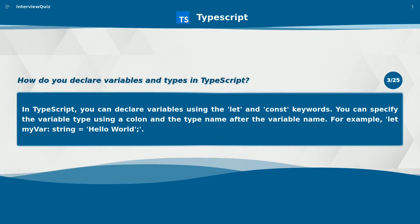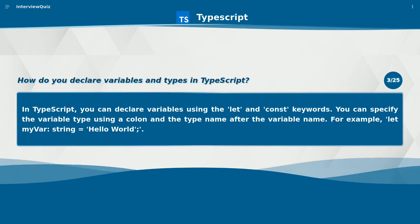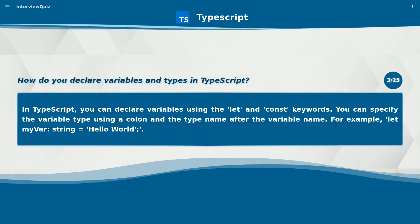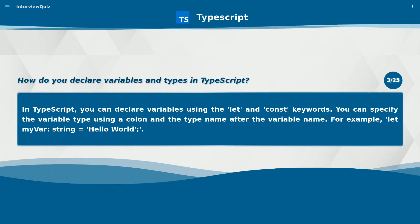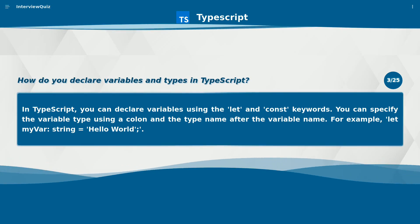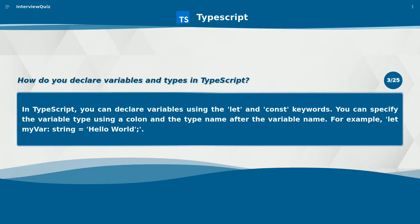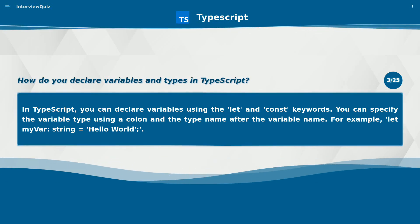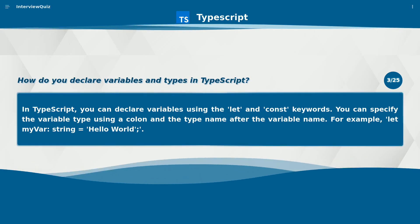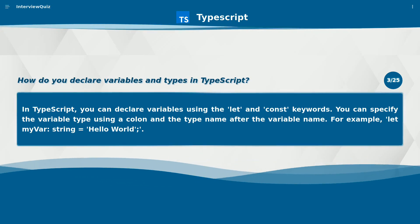How do you declare variables and types in TypeScript? In TypeScript, you can declare variables using the let and const keywords. You can specify the variable type using a colon and the type name after the variable name. For example: let myVar: string = 'hello world'.